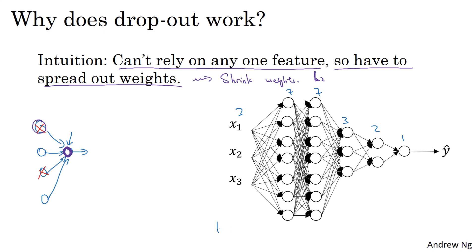So one of the parameters we had to choose was the keep_prop, right? Which is the chance of keeping a unit in each layer. So it is also feasible to vary keep_prop by layer.